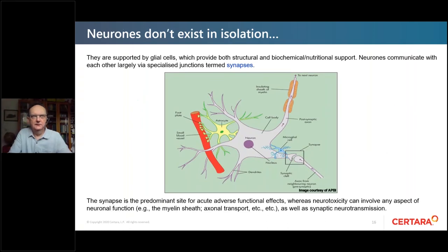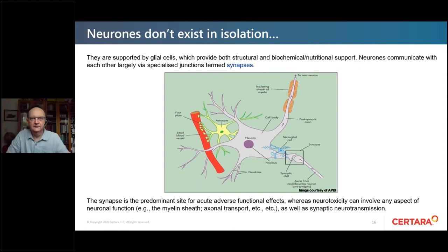Neurons don't exist in isolation — they are supported by glial cells, which are also targets for neurotoxins. Neurons communicate largely via specialized junctions called synapses, which are the predominant site of action for acute adverse functional effects. Neurotoxicity with irreversible change can involve any aspect of neuronal or glial function — for example, changes to the myelin sheath, inhibition of axonal transport, as well as effects on synaptic neurotransmission.